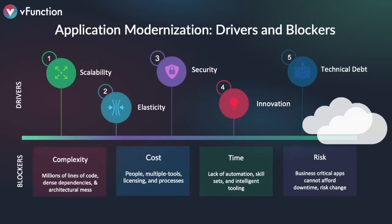Application modernization is being pushed in the enterprise by a range of issues. Part of it is moving to the cloud and the scalability and elasticity that comes from that, which yields agility and benefits from both an engineering and a business perspective. There are security holes emerging every day around legacy code. And almost more importantly, the technical debt that's developing is inhibiting innovation — almost 75% of IT budgets are going to legacy systems, dramatically affecting the ability to innovate and drive new business services.